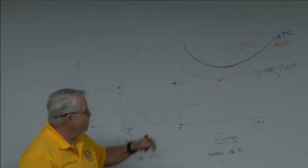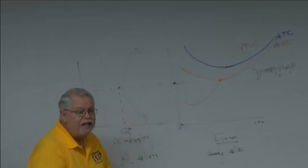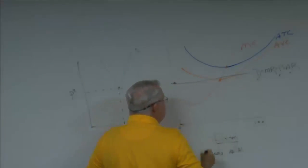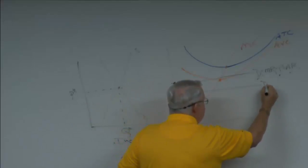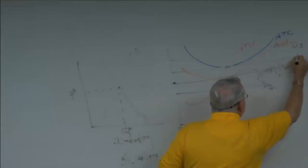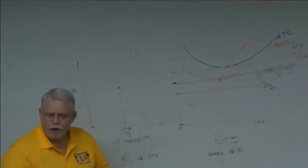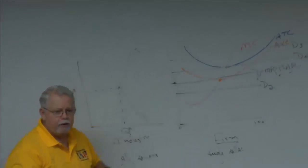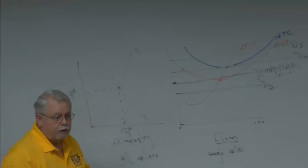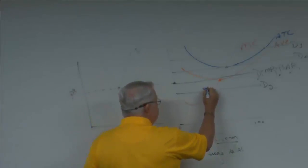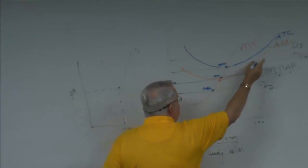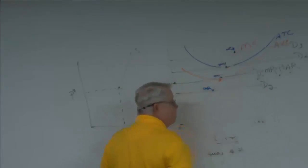The firm takes the price as a given — they don't choose the price. They're told: today the price is here; tomorrow it's D1; next week it's D4. You've got to interpret the graph based on the position of the price line. For each demand curve, find alpha — D2 gives alpha 2, D1 gives alpha 1, D3 gives alpha 3, D4 gives alpha 4 — each with a quantity associated with it.